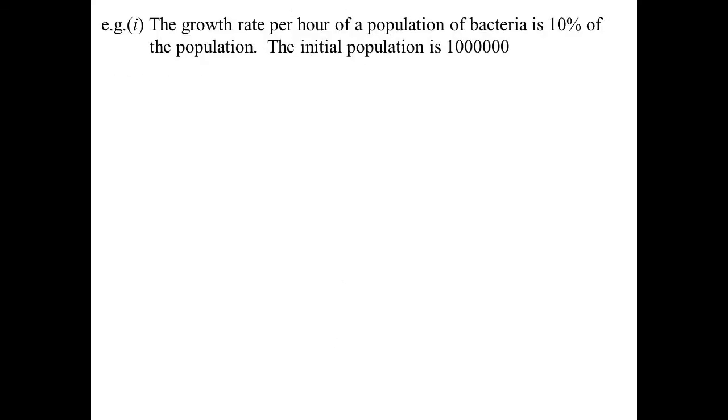Let's have a look at this example. Bacteria. Oh, seems topical. Growth rate per hour of a population of bacteria is 10% of the population. The initial population is, how many zeros have I got there? A million. All right, so just imagine there's a million pieces of this bacteria crawling all over your body at the moment. They're there, trust me, you might not be able to see them, but they're just crawling over you, even as we speak.